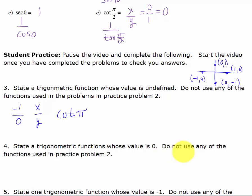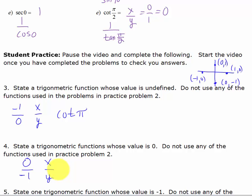For a trig function whose value is 0, I need 0 in the numerator. Using 0 over negative 1, that brings me to the ordered pair 0, negative 1, where x is 0 and y is negative 1. Since x over y is cotangent, that gives us cotangent of 3 pi over 2 equals 0.